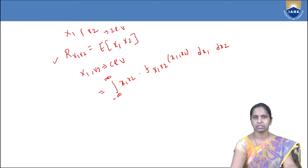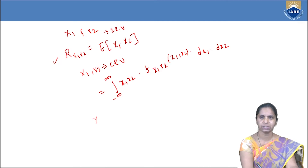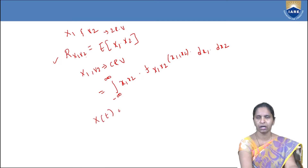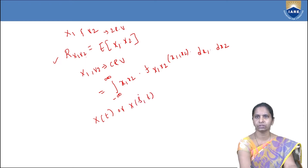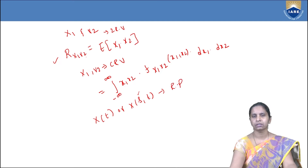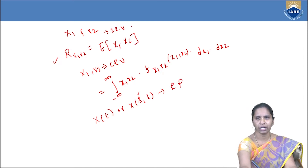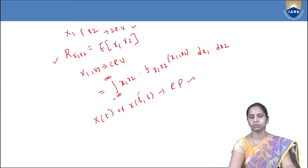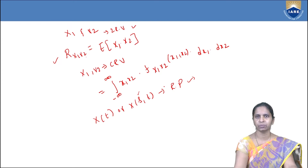Now, the same concept we are applying to the random process also. The random process is represented by x(t), also called x(s,t). It is a function of both the sample space elements as well as the time variable. This is called a random process. We have seen the correlation between two random variables; now, how do we apply the same concept of correlation to the random process?